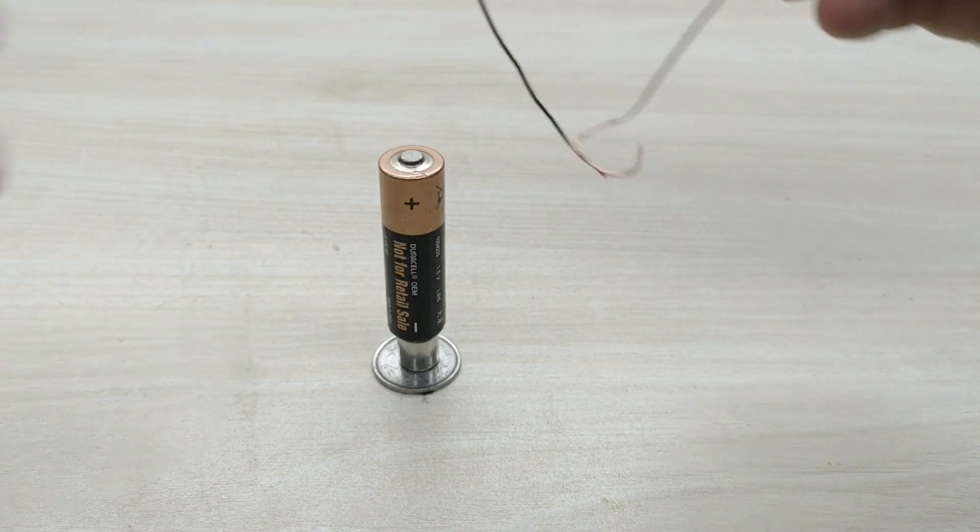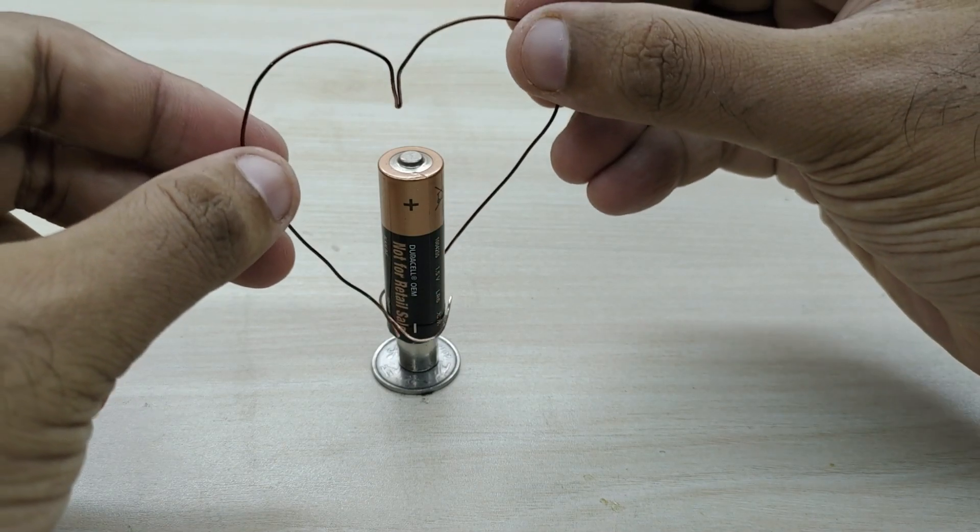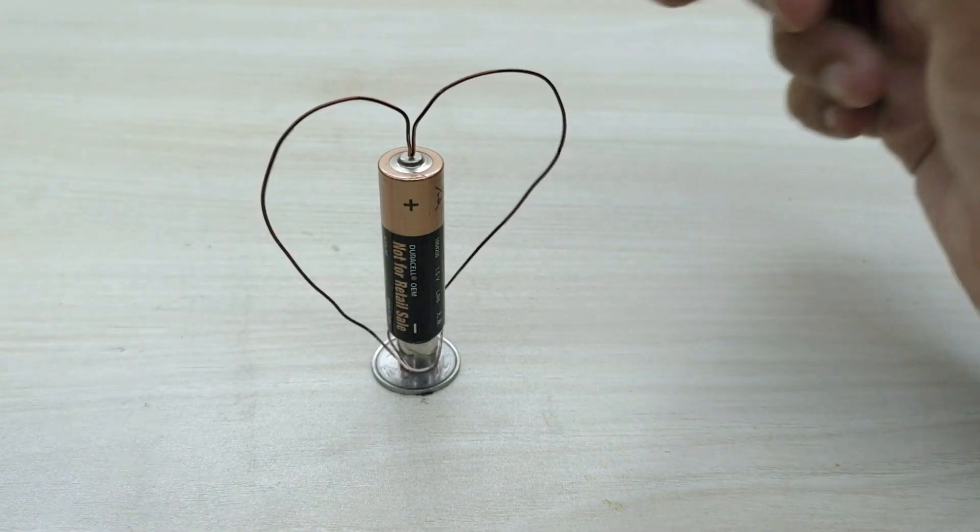You can also make coils of different shapes like heart, helical coils, etc., and all shapes will work as a homopolar motor.